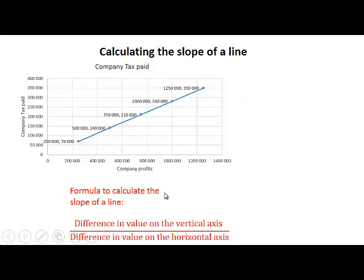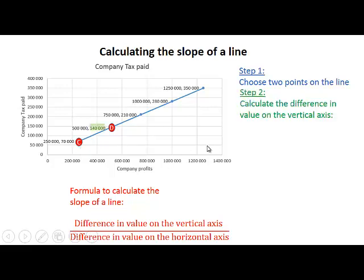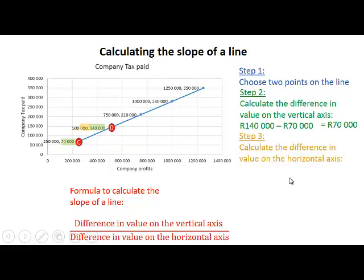We use the same formula: difference in value on the vertical axis divided by difference in value on the horizontal axis. The two points given are point C and point D. Calculating the difference on the vertical axis: at C it is 70,000 and at D it is 140,000, so 140,000 minus 70,000 gives us 70,000. Company tax paid increases by 70,000.